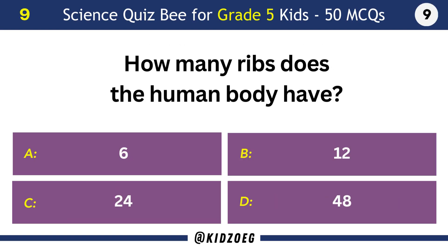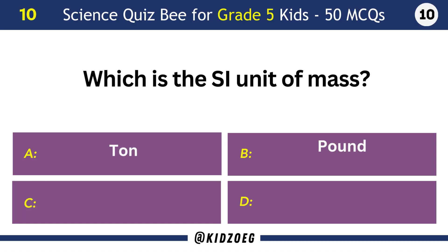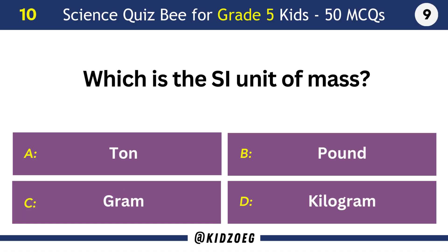How many ribs does the human body have? 24. Which is the SI unit of mass? Kilogram.